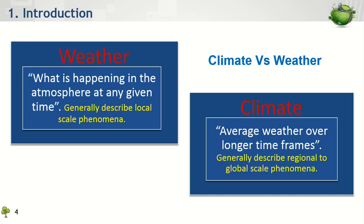On the other hand, the term climate is used to describe the average weather over a long time frame, usually about three decades and for a regional or global scale. So when we talk about climate change, we are talking about the atmospheric variation of a region over a 30-year period or so. Therefore, differences in precipitation and temperature between last year's summer and this year's summer is not climate change — it is just the variation of local weather.